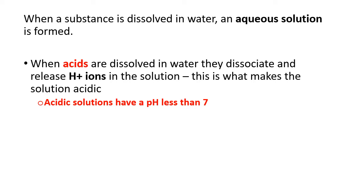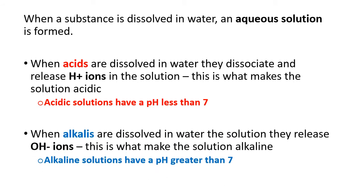What actually happens when acid particles dissolve in water is that they release hydrogen ions in the solution, and it's those hydrogen ions that make the solution acidic. Hydrochloric acid, sulfuric acid, and nitric acid all have in common that they contain hydrogen ions. When alkalis are dissolved in water, they release hydroxide ions — OH minus ions — which make the solution alkaline, and alkaline solutions have a pH greater than 7.